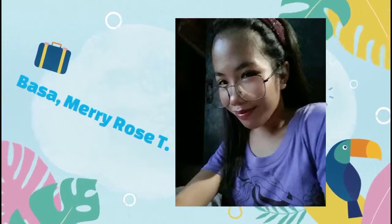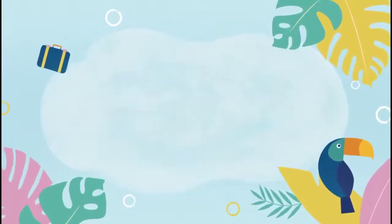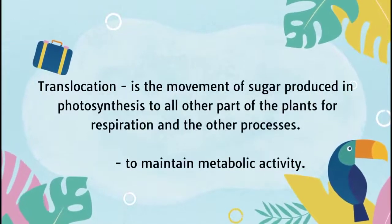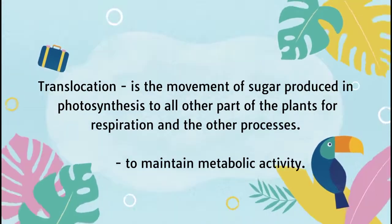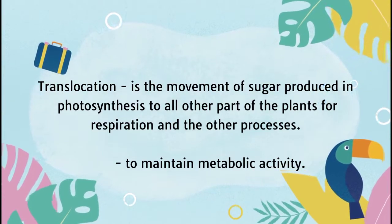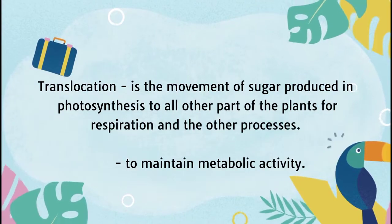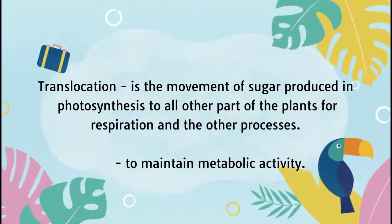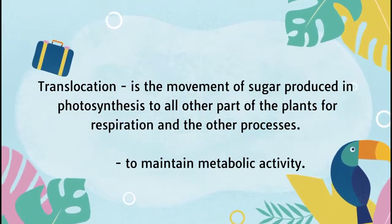Good day everyone. I am here to discuss translocation under Module 2: Physiological Processes Affecting Crop Production. Translocation is the movement of sugar produced in photosynthesis to all other parts of the plant for respiration and other processes. Ibig sabihin po nito, ang translocation ay isang proseso para ma-distribute ang sugar na naproduced ng photosynthesis sa lahat ng parts ng isang halaman, which is used for growth and maintenance.